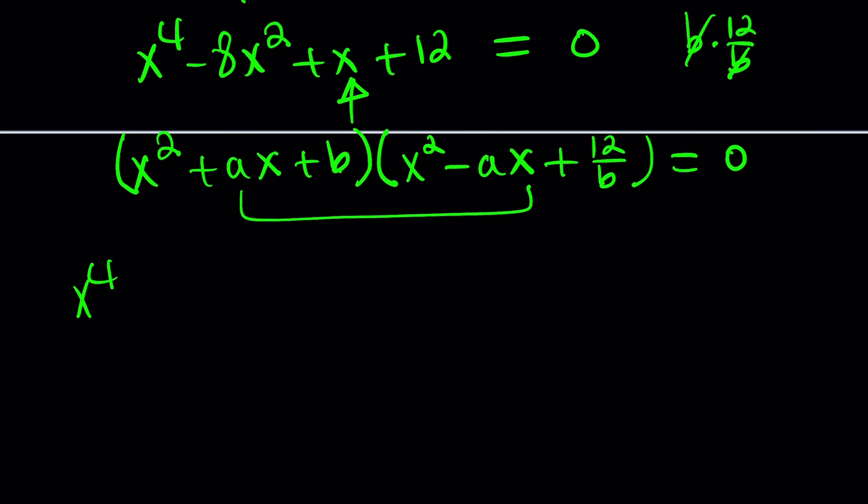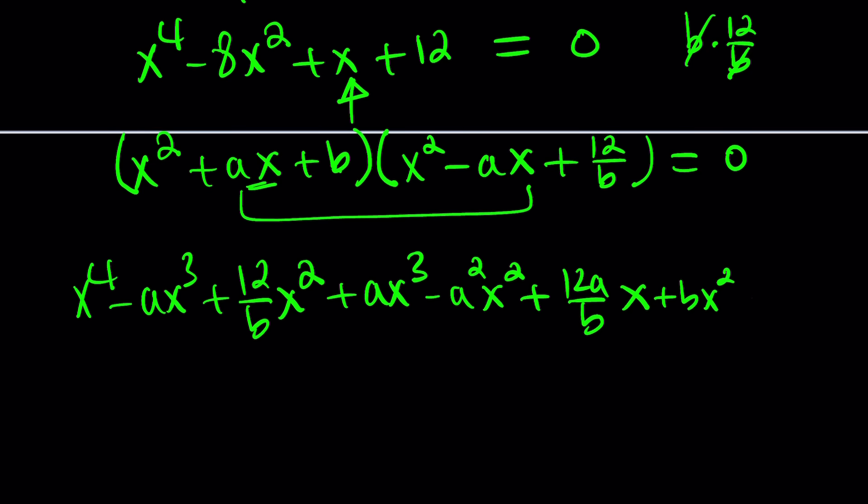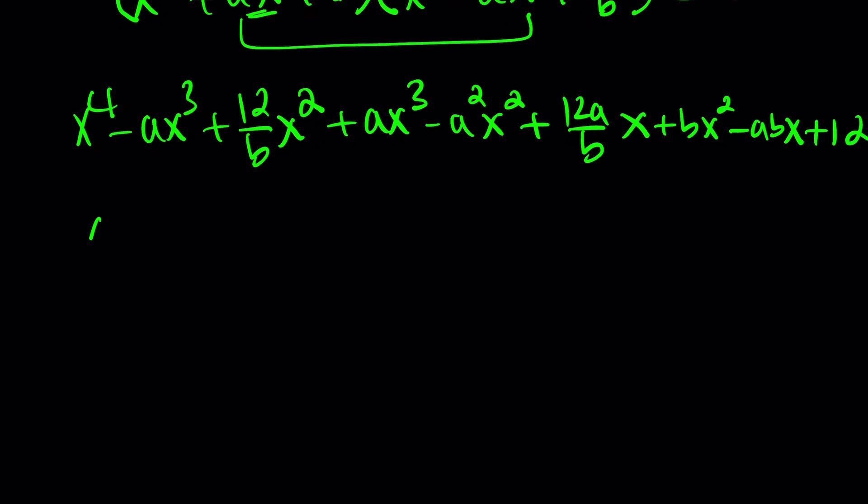Well, there's only two variables. That shouldn't be too hard. We can distribute this completely and set it equal to that. We get x to the fourth power minus ax cubed plus 12 over b x squared minus a squared x squared plus 12a over b x. Then distribute the b: bx squared minus abx and finally plus 12.